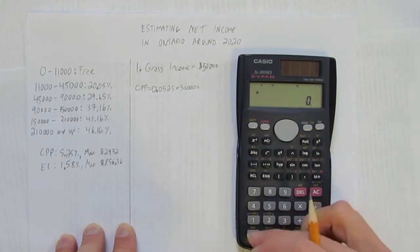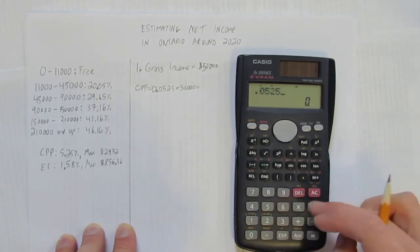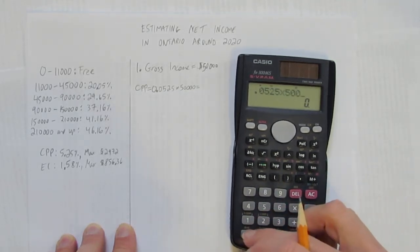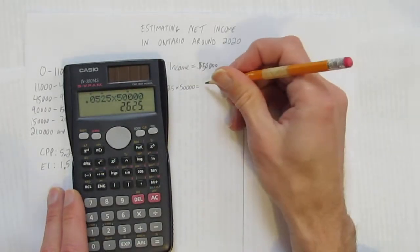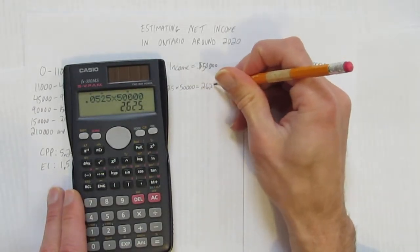So if you're making $50,000, you do 0.0525 times 50,000. And that tells you for the year, you'll be charged $2,625.